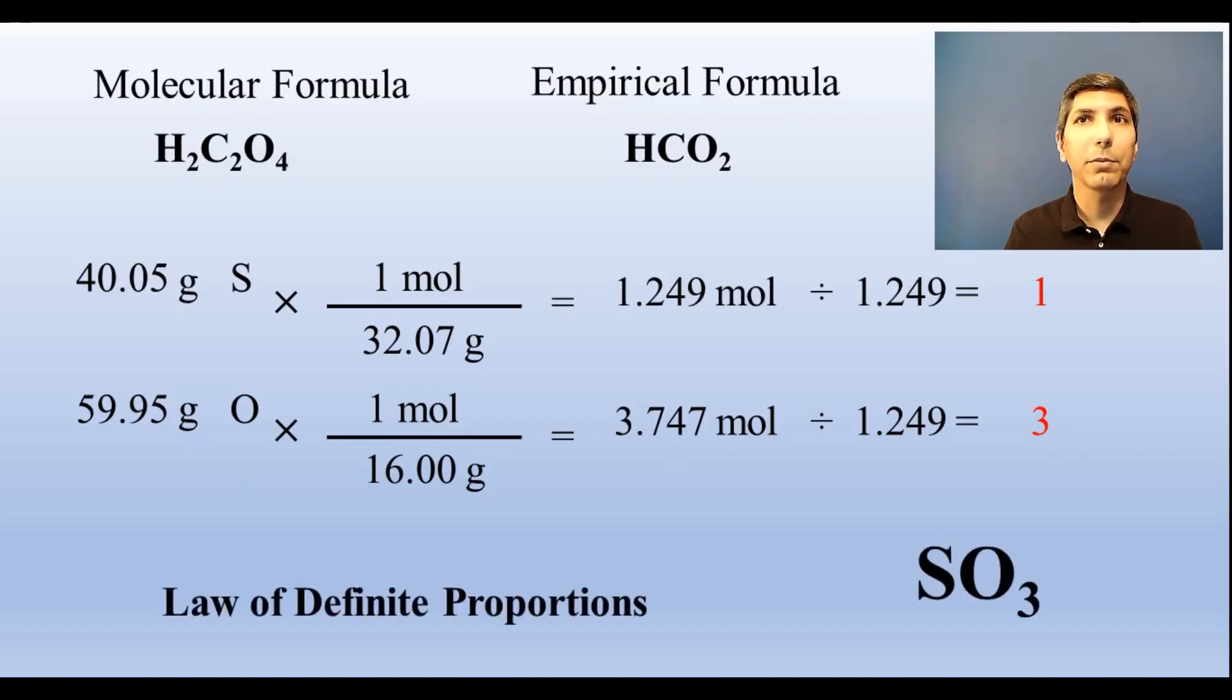Now the law of definite proportions tells us that every sample of SO3, sulfur trioxide, no matter where it comes from, will always have that same proportion, 40.05 percent sulfur and 59.95 percent oxygen.